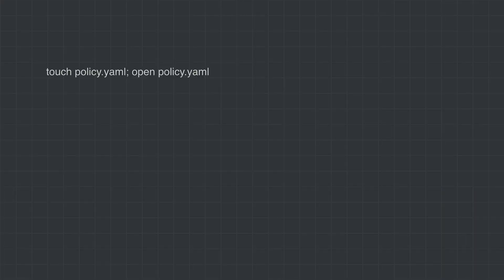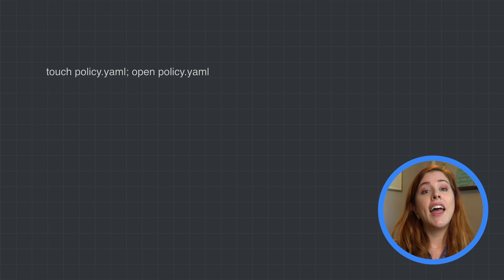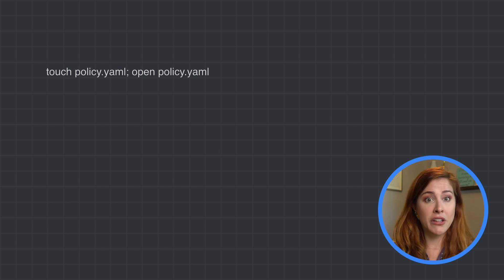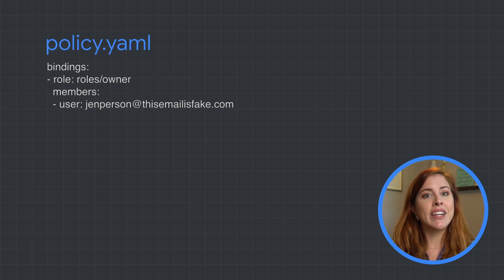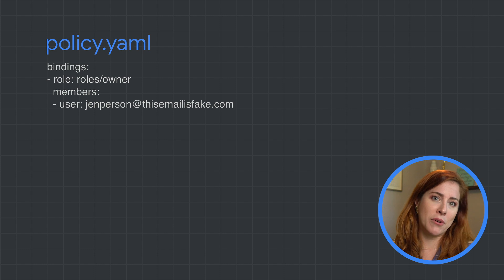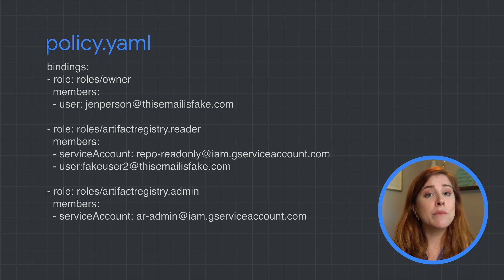Let's grant some roles for the repository we just made for my completely fake company, Drain. I'm using the GCloud CLI because it rocks. To add roles via the CLI, I need to create a reference policy file named policy.yaml. In that file, I start with the bindings key, then name a role and list members.